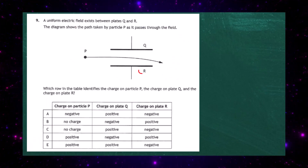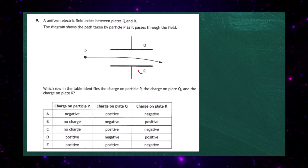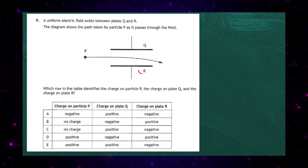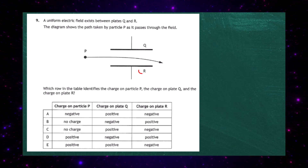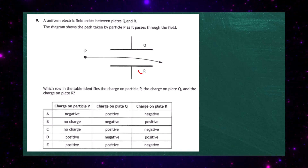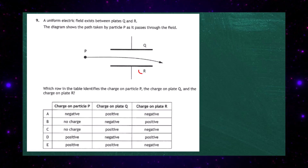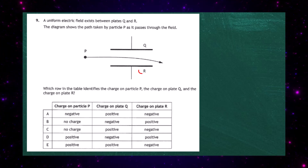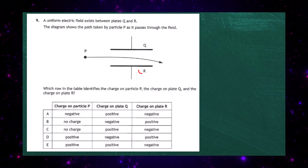Question 9 from the 2023 National 5 Physics examination. A uniform electric field exists between plates Q and R. The diagram shows the path taken by particle P as it passes through the field. Which row in the table identifies the charge on particle P, the charge on plate Q, and the charge on plate R?